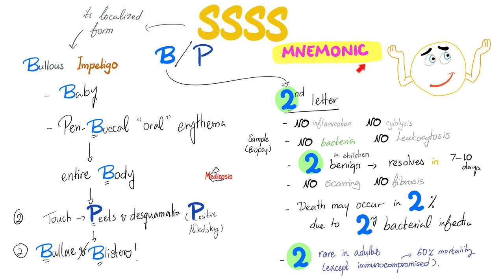Staph scalded skin syndrome mnemonics — the B and P mnemonic. Don't forget that bullous impetigo is a localized version of Staph scalded skin syndrome. Bullous impetigo: it's a baby with peribuccal erythema, and then it's going to spread to the entire body, peeling and desquamating the skin, giving you the positive Nikolsky sign — bullae and blisters all over the body. Two and two: exfoliative toxin A and B, peeling and desquamation. No inflammation, no cytosis, no bacteria, no leukocytosis. In children, it's too benign — it will resolve on its own in seven to ten days, thanks to antibody neutralization. When it heals, it leaves no scarring, no fibrosis.